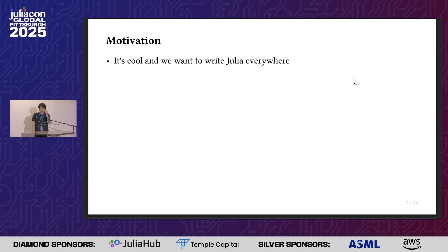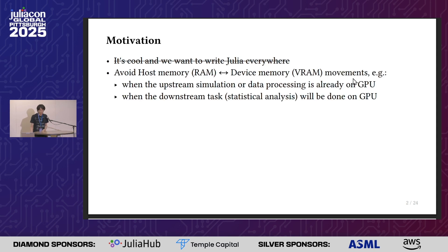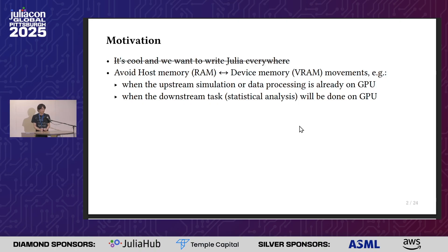The motivation for making GPU histograms is: it's cool and we want to write Julia for everything. If you want a slightly more practical motivation, it's that we want to avoid moving data back and forth between host memory and device memory. For example, when a previous simulation or data processing is done on GPU and then you bin the distribution statistics and move on to something else — you don't want to move a lot of data off the device just to make histograms.